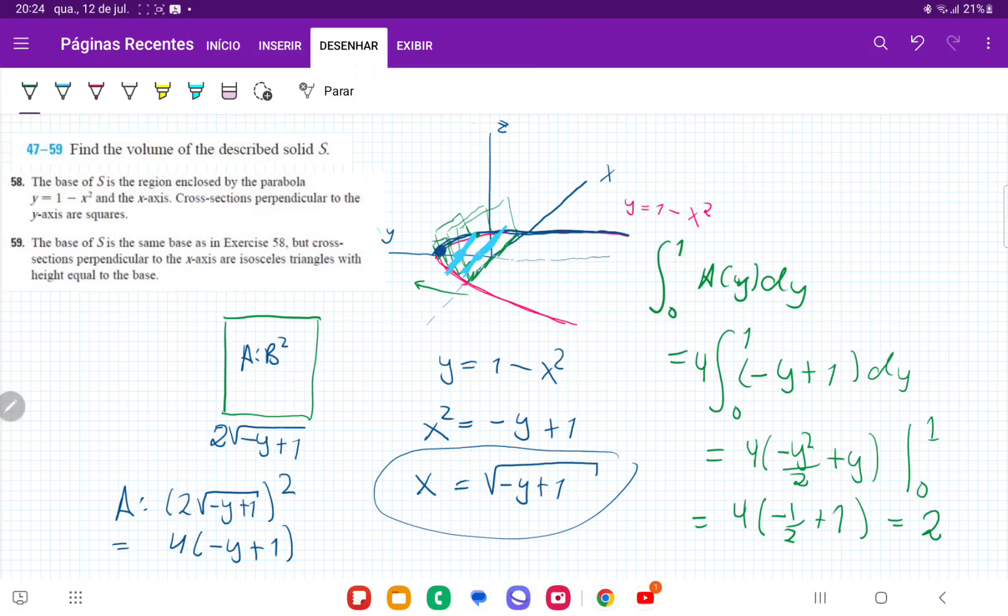And so this is the volume as we take these squares whose base is twice the height of this curve here in blue, and then that base will create a square. And basically, we're summing up these squares from 0 all the way out to y is equal to 1.